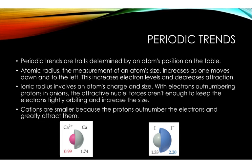Ionic radius involves an atom's charge and size. With electrons outnumbering protons and anions, the attractive nuclear forces aren't strong enough to keep the electrons tightly orbiting and increase the size. Cations are smaller because the protons outnumber the electrons and greatly attract them.